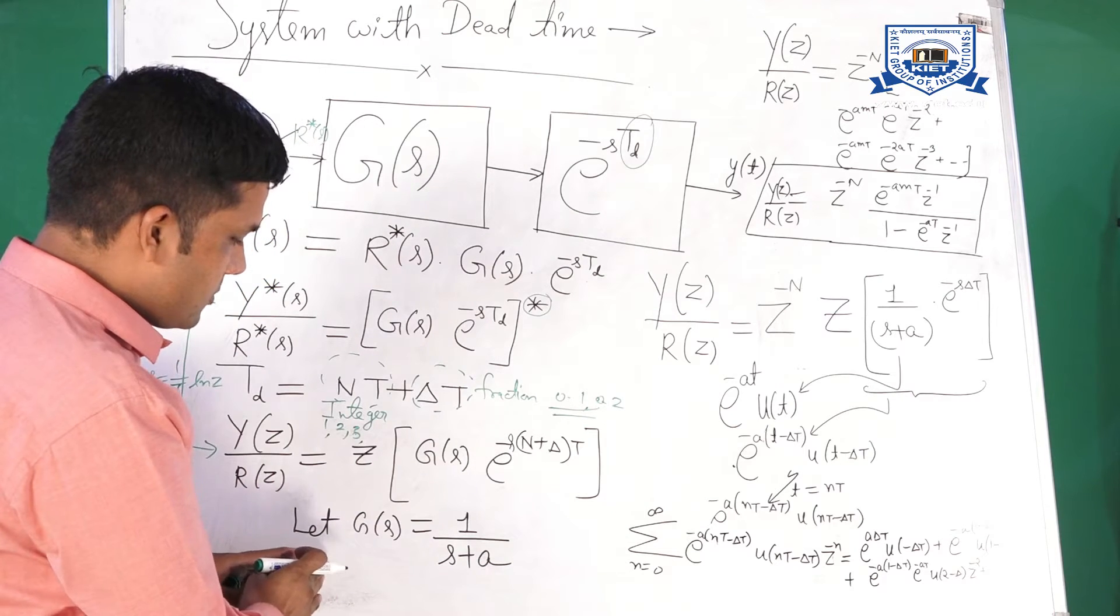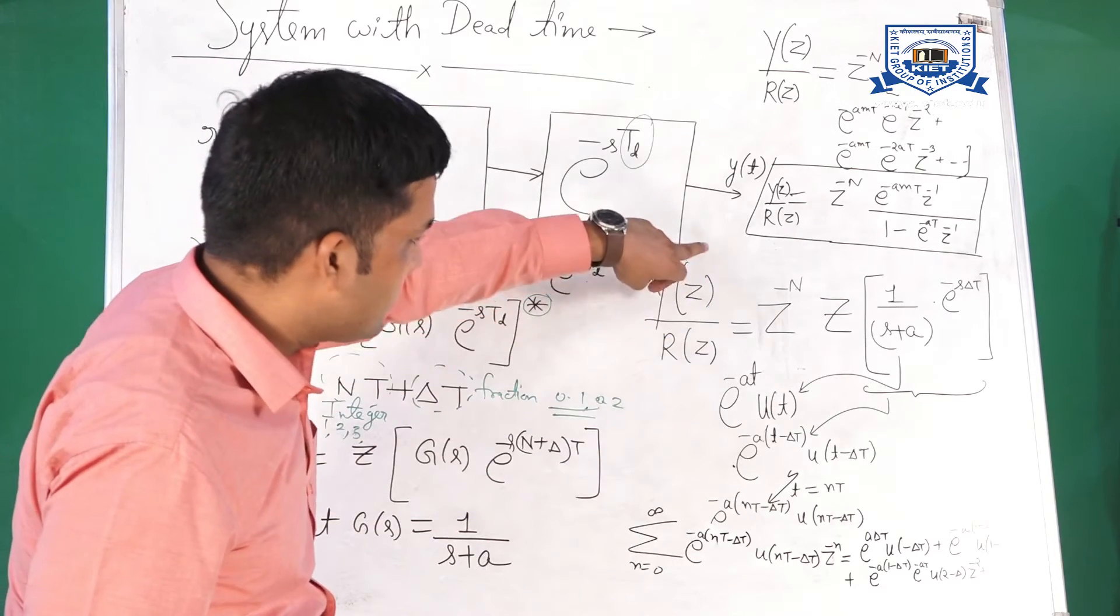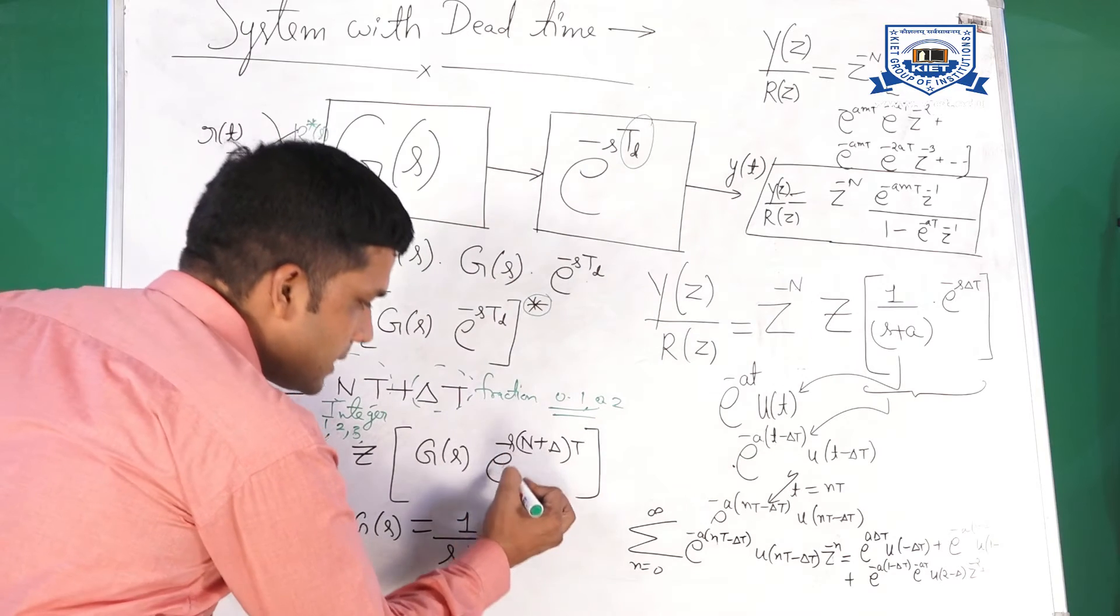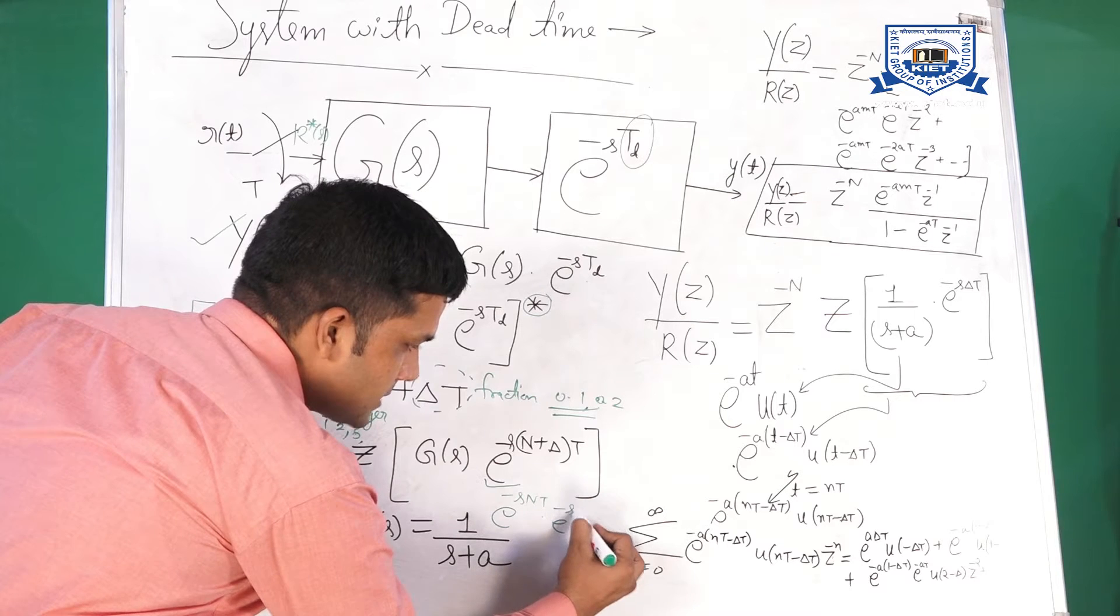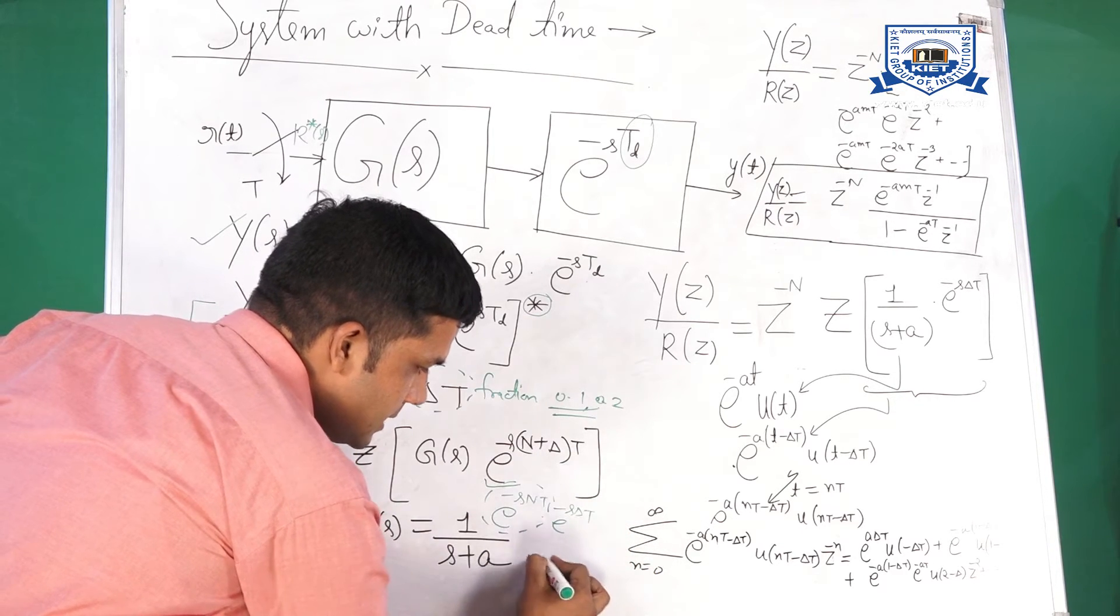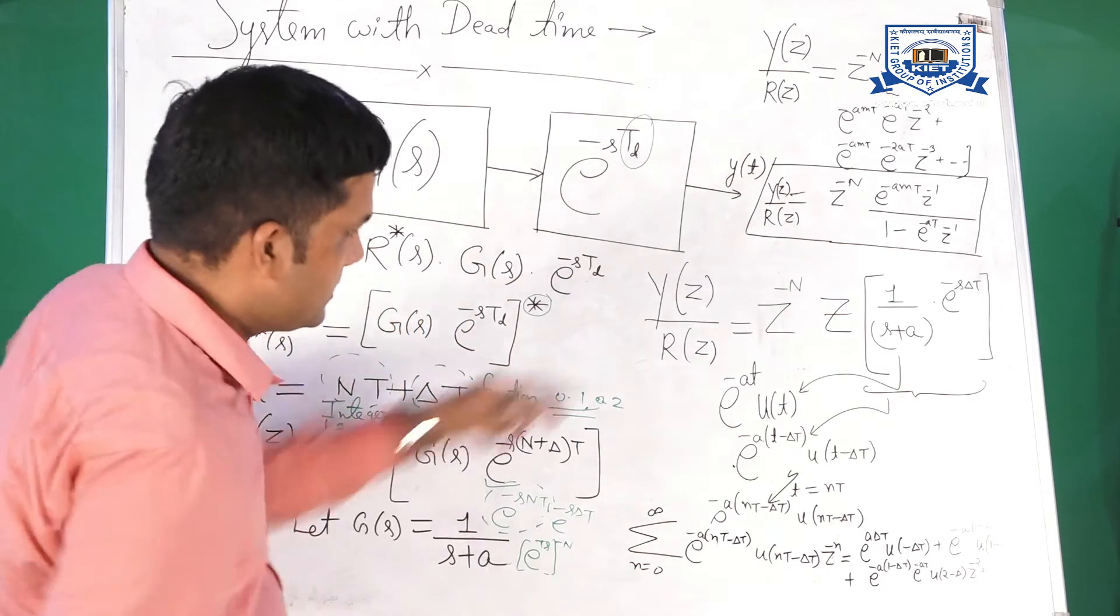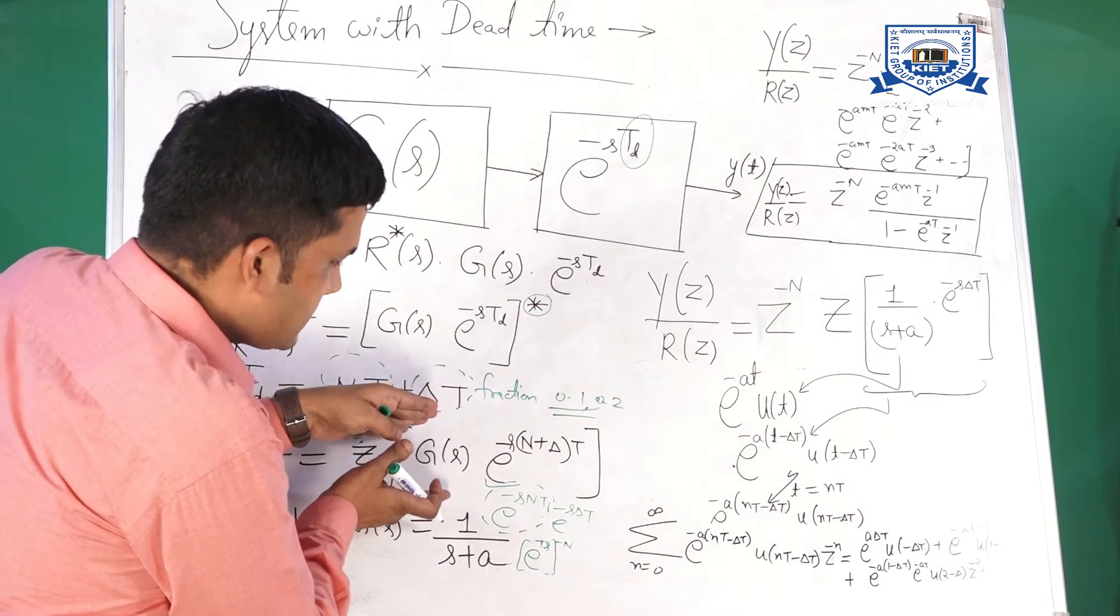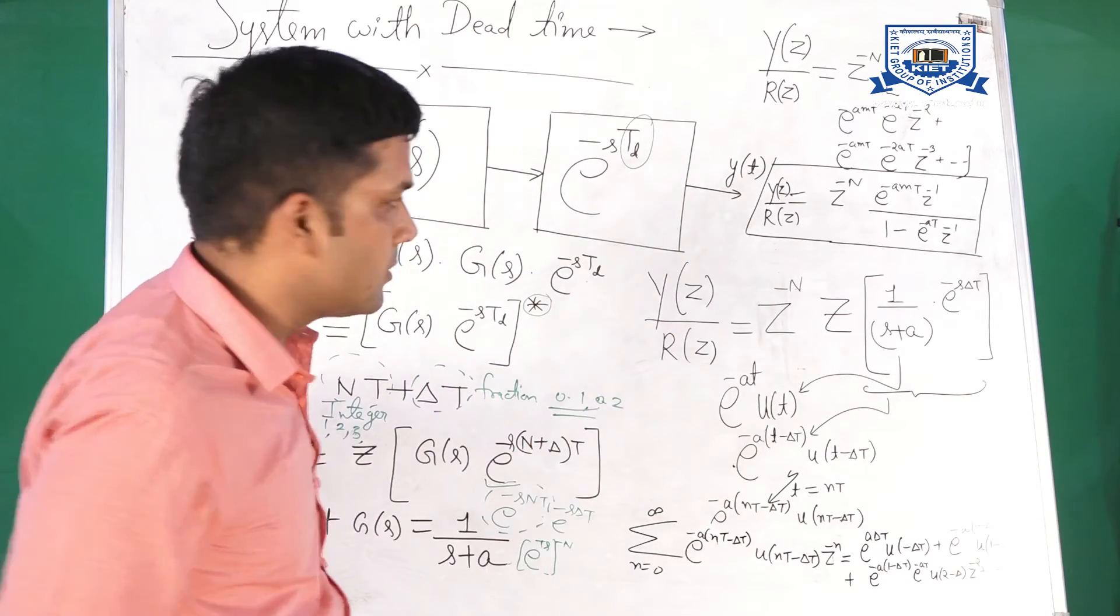And now if we are assuming Gs is equal to first order function, 1 upon s plus a. Then Yz upon Rz is equal to z to the power minus n. Because here, e to the power minus s n t into e to the power minus s delta t. And it may be written as e to the power t s to the power minus n. And this is z. z to the power minus n into z transform of the remaining part. Remaining part is Gs into e to the power minus delta t s.